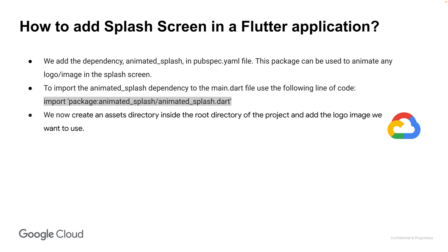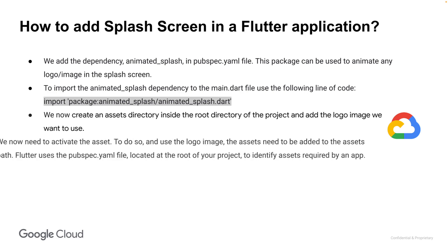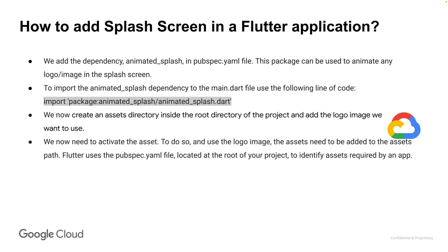We now create an assets directory inside the root directory of the project and add the logo image we want to use. We then need to activate the asset. To do so, the assets need to be added to the assets path. Flutter uses the pubspec.yaml file located at the root directory of our project to identify the assets that are required by our app.